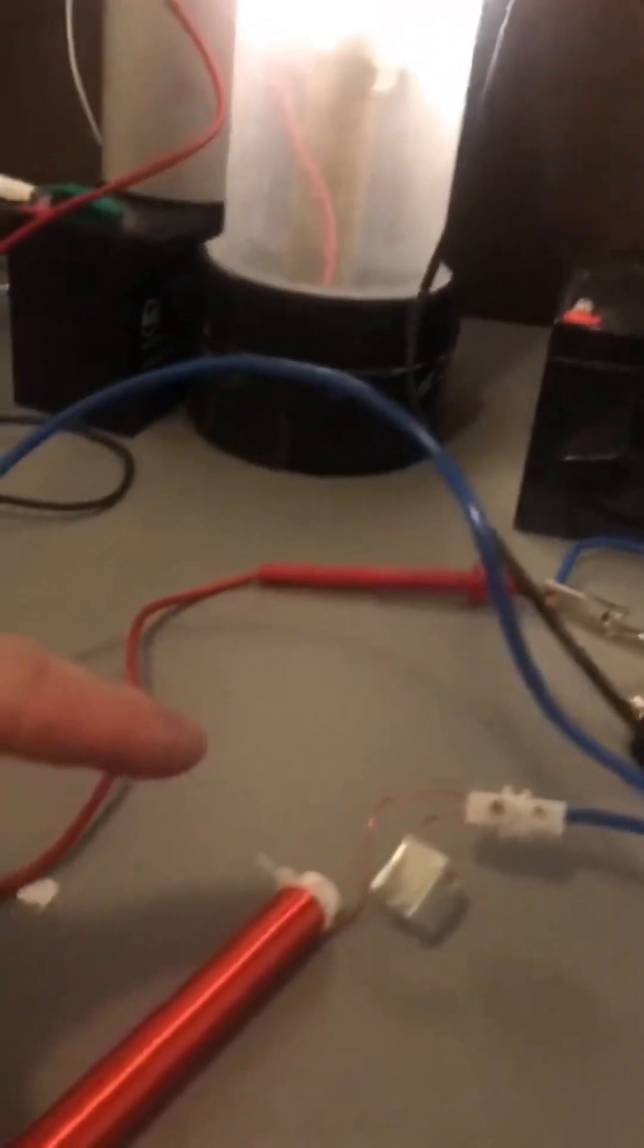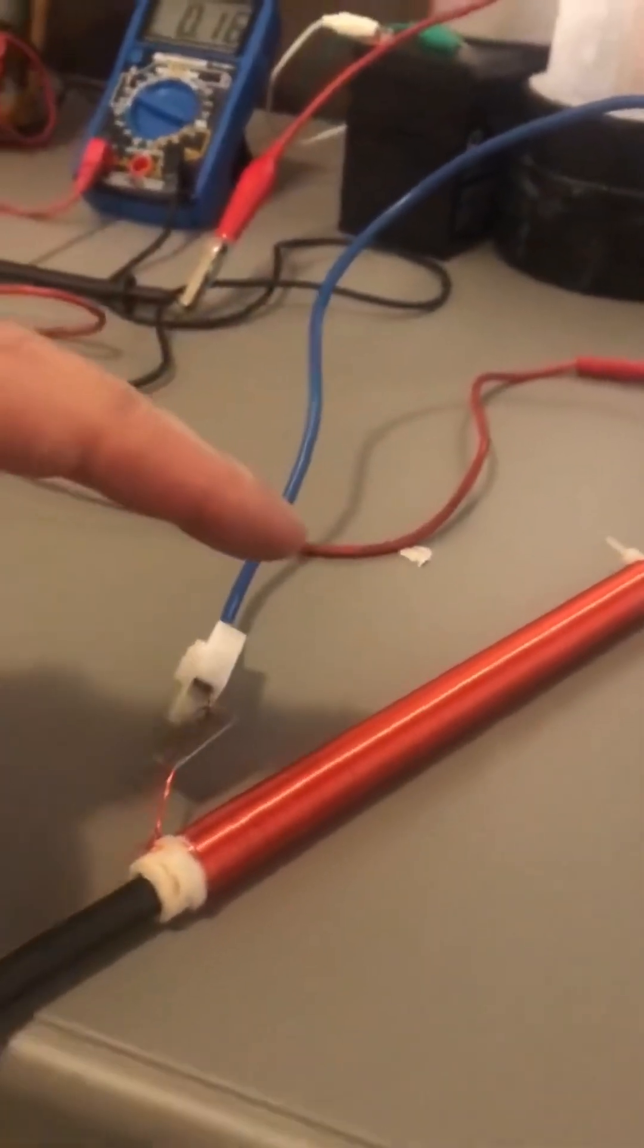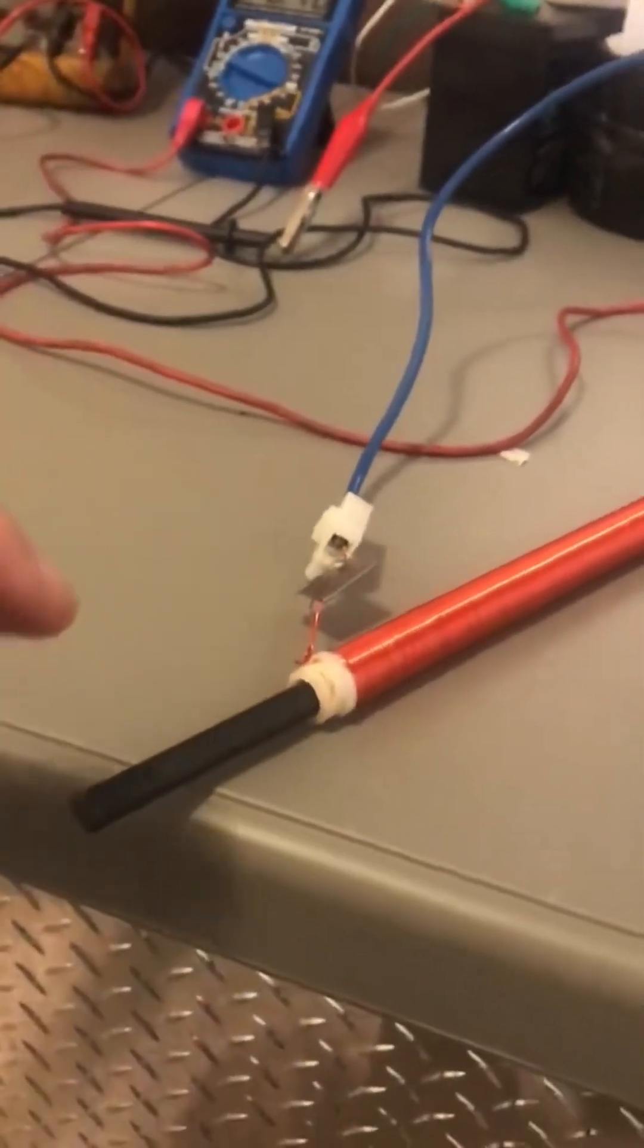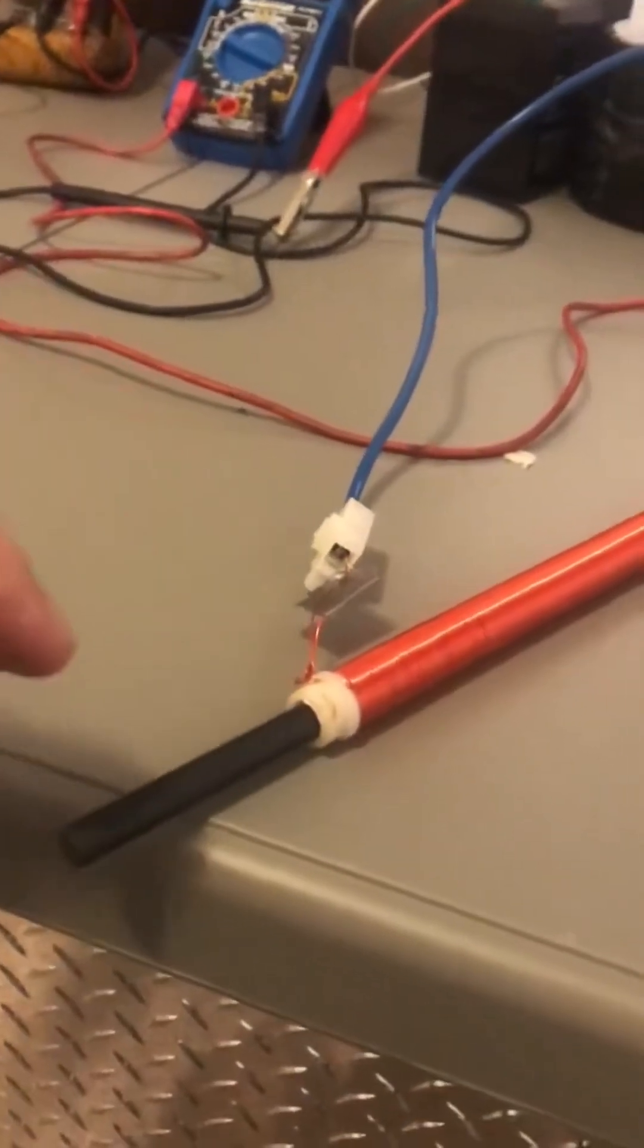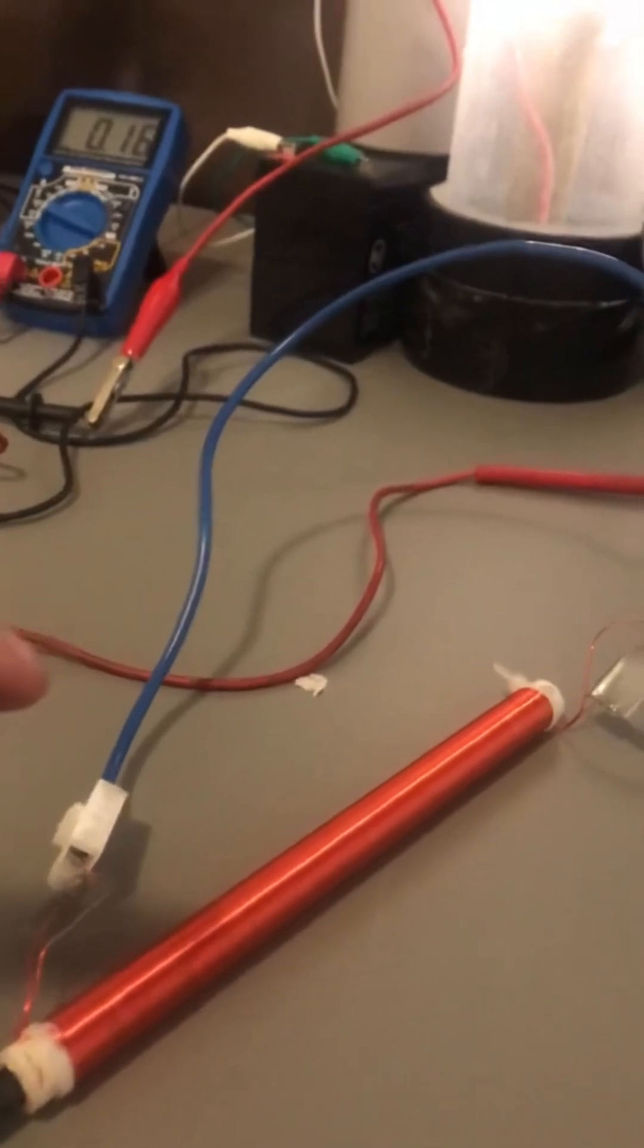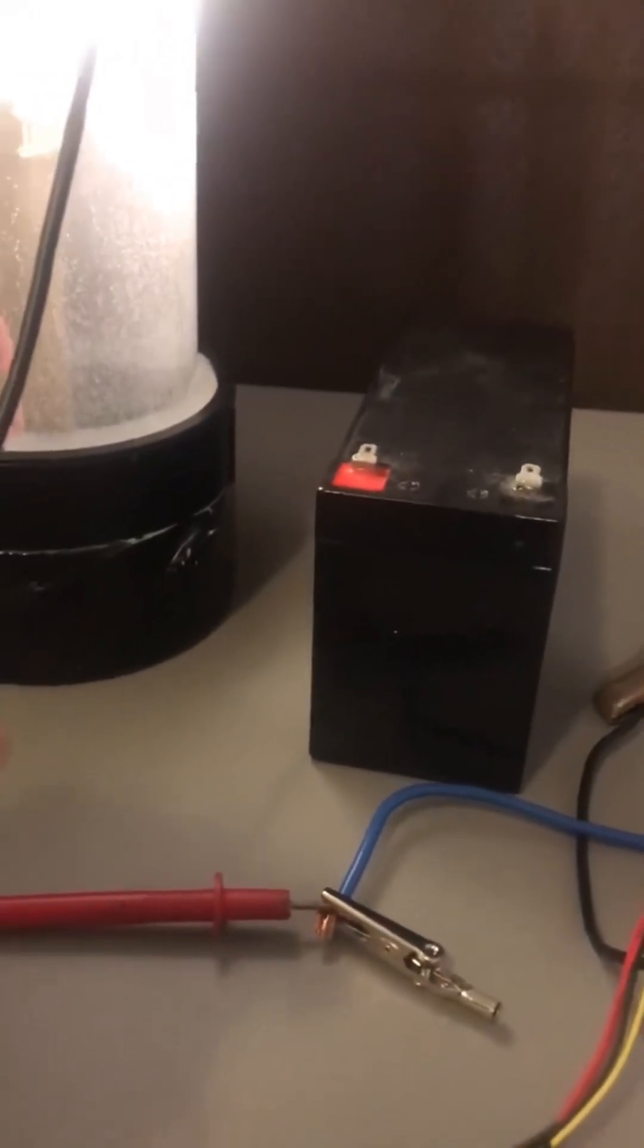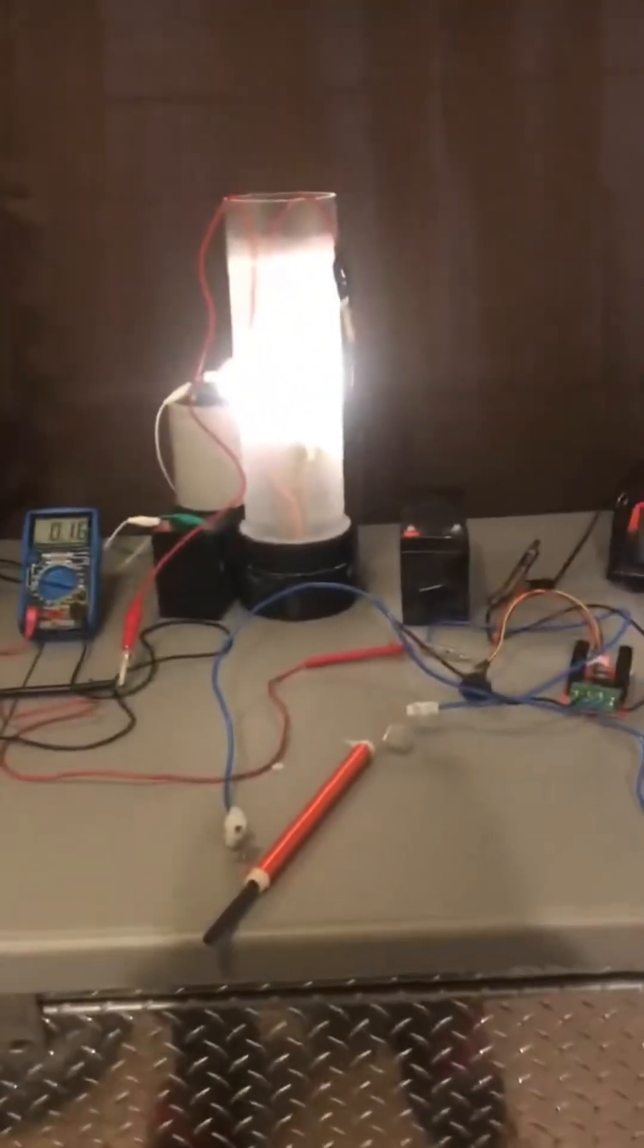The PWM then comes out and goes into the adjustable Don Smith type bi-filer coil. And you can see I've adjusted it by sliding the ferrite rod. The ferrite rod goes all the way around and into the other meter, and that meter comes out and goes directly into the cell. Try and back up a bit here so you can see it all.